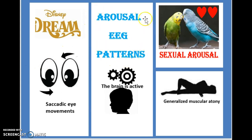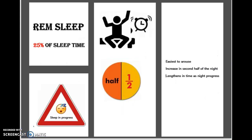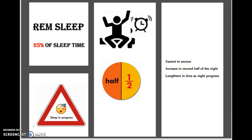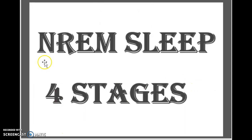Additional features of REM sleep include arousal EEG patterns and generalized muscular atonia. REM sleep takes up about 25 percent of your total sleep time. This is the stage where it is easiest to be awakened. It increases in the second half of the night and lengthens in duration as the night progresses.